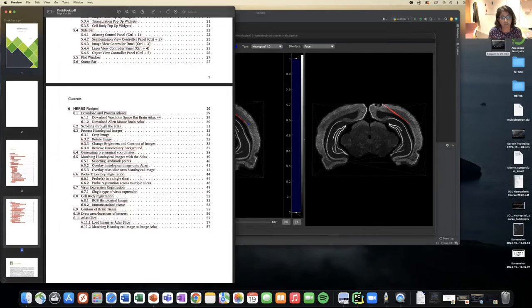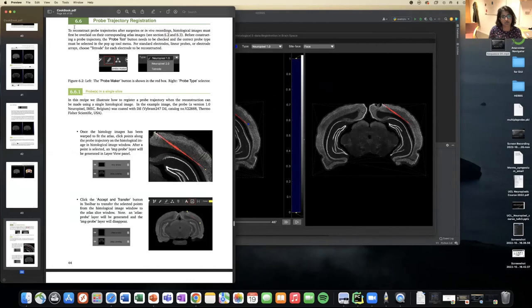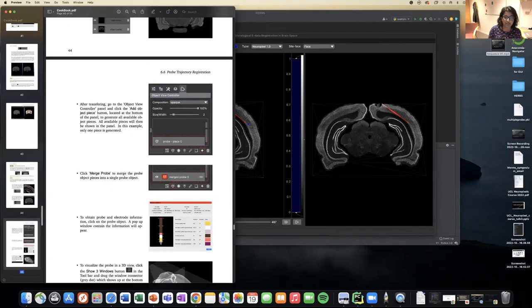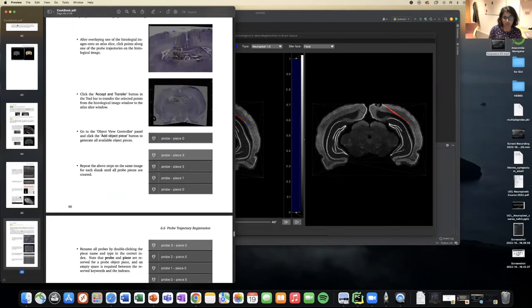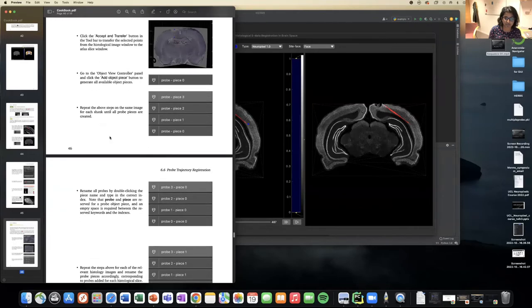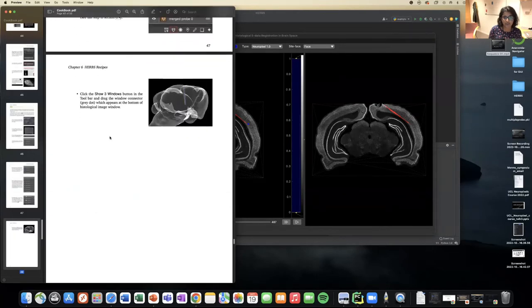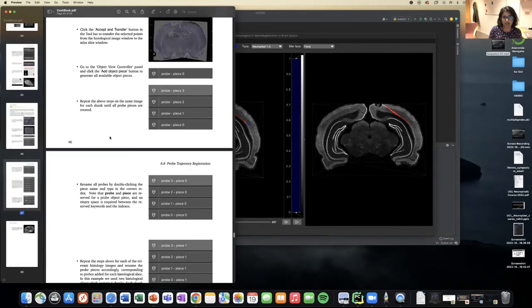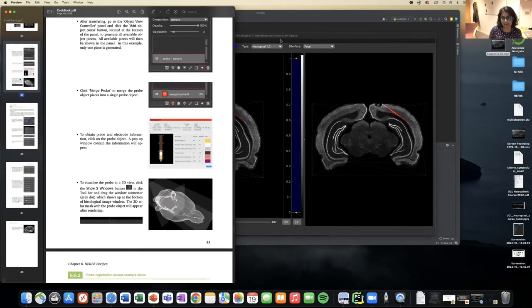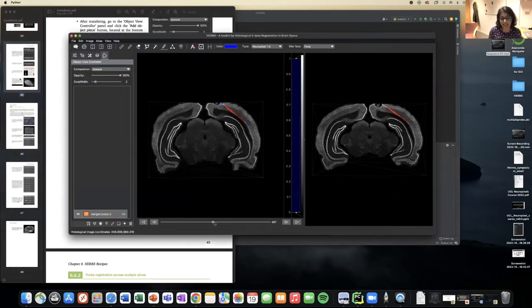This is a coronal section of one slice probe track. But sometimes it's not the case. We have multiple slices with the probe track. So to do that, you go to section 6.6 on our cookbook. And you can see we have both Neuropixel 2 instructions of how to register probe tracks as well as how to go through multiple slices.